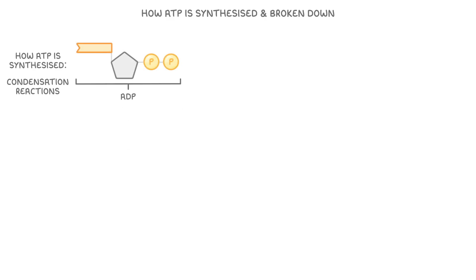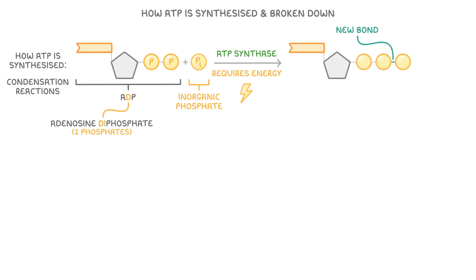In this case, ADP, or adenosine diphosphate, where diphosphate means two phosphates, combines with an inorganic phosphate group, which we show as this P with a little subscript i next to it. This reaction is then catalyzed by an enzyme called ATP synthase, and it requires an input of energy in order to form a new bond between the phosphate groups.